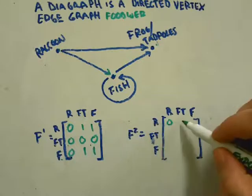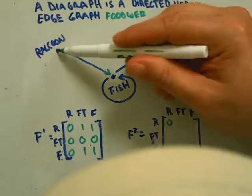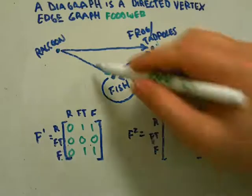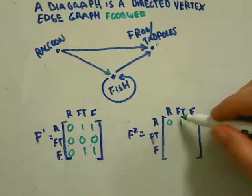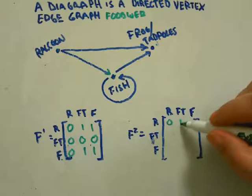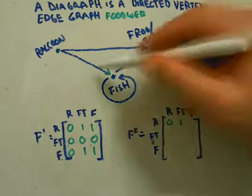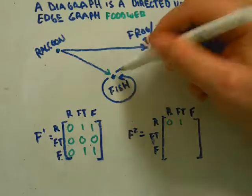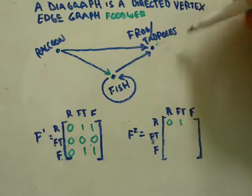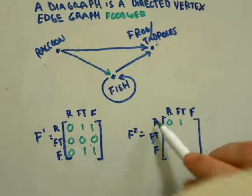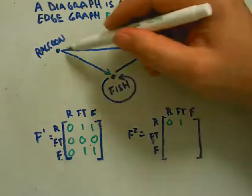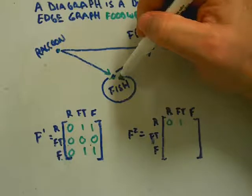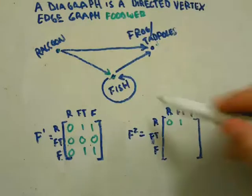fish to frogs and tadpoles. That's two arrows, so you count that as one route with one intermediary. They have one way to get to frogs and tadpoles - raccoons going through one intermediary, which is the fish. Now, raccoons to fish - you go to fish, but then you can go to other fish, so that's one intermediary as well. That also counts as one.